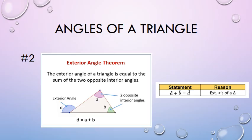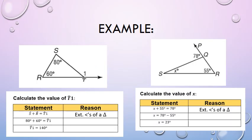Let's look at an example. On the left-hand side, we need to find T1. T1 is the exterior angle of the triangle, equal to the opposite interior angles. Going to the inside, the opposite angles are 80 and 60 — angle S and angle R. So angle S plus angle R equals angle T1. Reason: exterior angles of a triangle. So 80 plus 60 gives T1 equals 140.